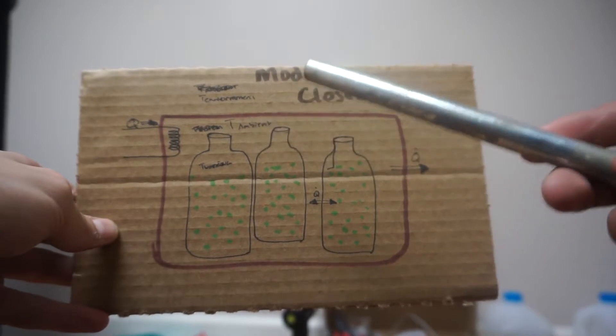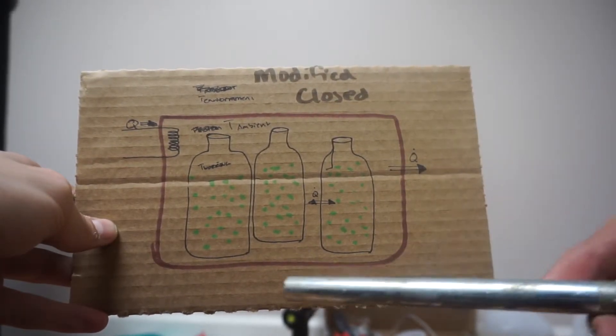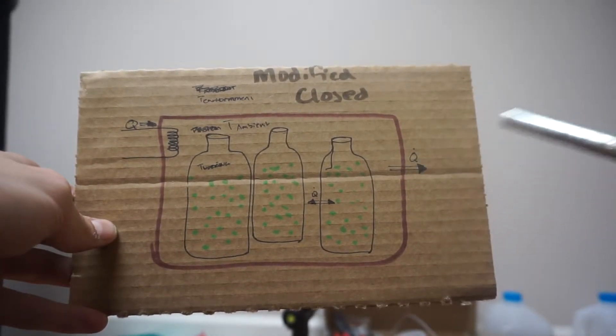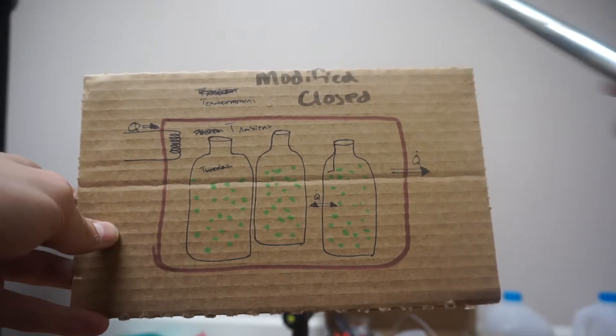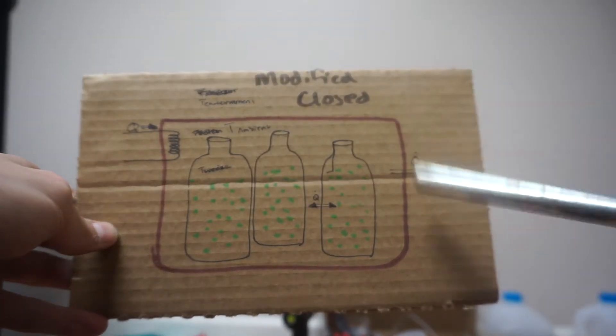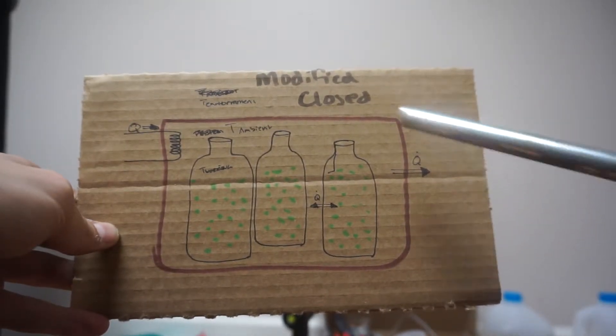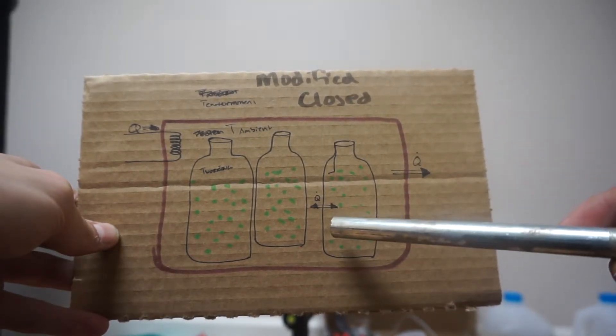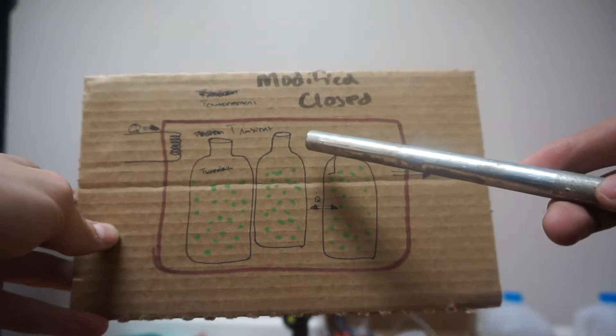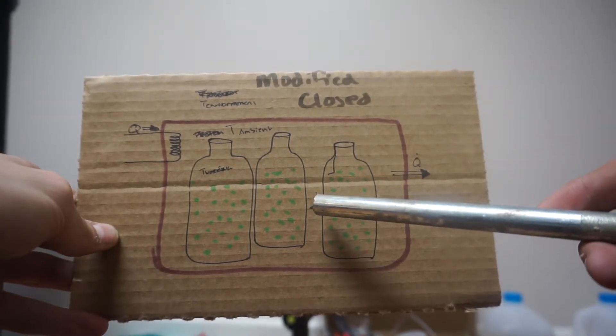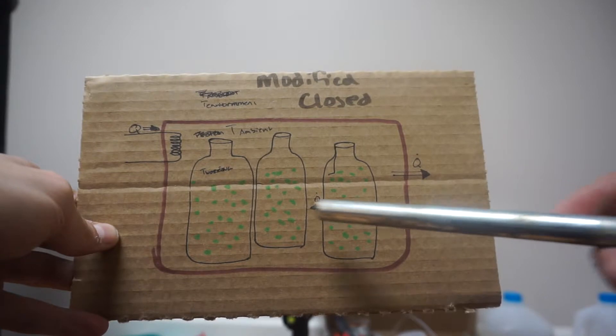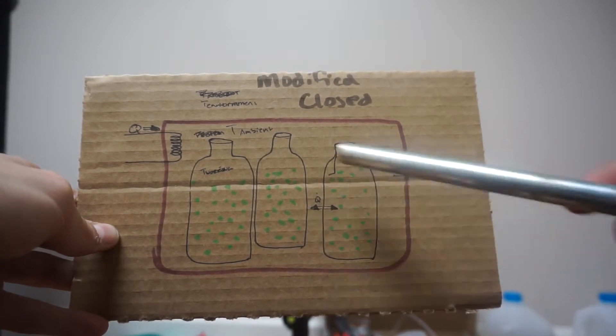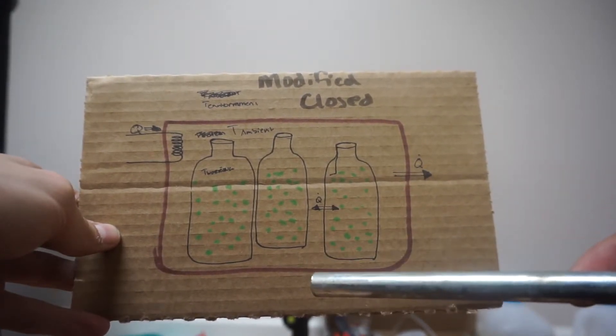And hopefully if we've insulated it right, we'll have our Q being very, very low. And so we don't have to heat very much because not much is leaving. And we don't have to worry about having coils inside these vessels because the temperature ambient is going to decrease this Q into its equilibrium so that you have just as much heat going in as you do coming out naturally.